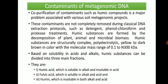Based on solubility in acids and alkali, humic substances are divided into three categories: first, humic acid, which is soluble in alkali and insoluble in acid; second, fulvic acid, which is soluble in both alkali and acid; and third, humine, which is insoluble in both alkali and acid.